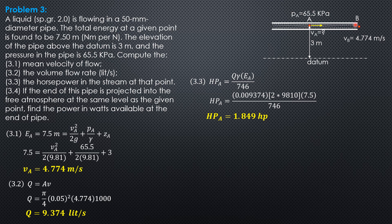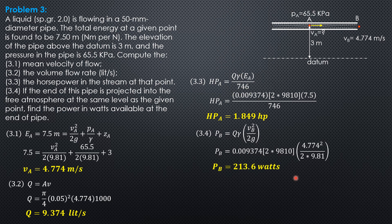The energy available at B is only the velocity head, so P_B = Qγ × (V_B²/2g). The velocity at B equals the velocity at A because the pipe has the same diameter. Therefore, P_B = (0.009374)(2×9810)(4.774²/(2×9.81)) = 213.6 watts.